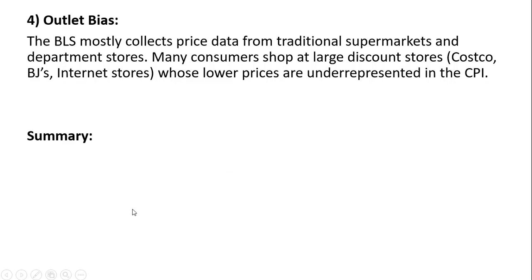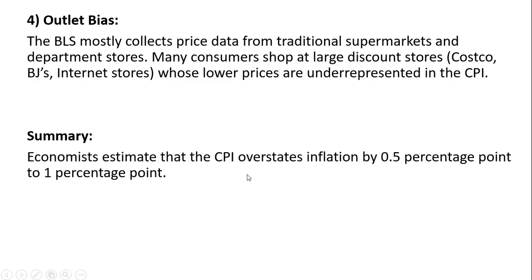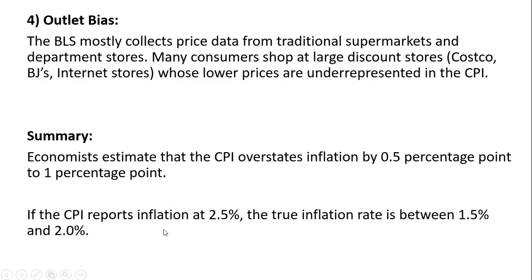Overall, in summary, economists estimate that the CPI overstates inflation by 0.5 percentage point to 1 percentage point. So for example, if the CPI reports inflation at 2.5 percent, the true inflation rate is between 1.5 and 2 percent — subtracting either 0.5 or as much as 1 percentage point gives you the ballpark of what the actual inflation rate is running. I hope you found this video helpful.